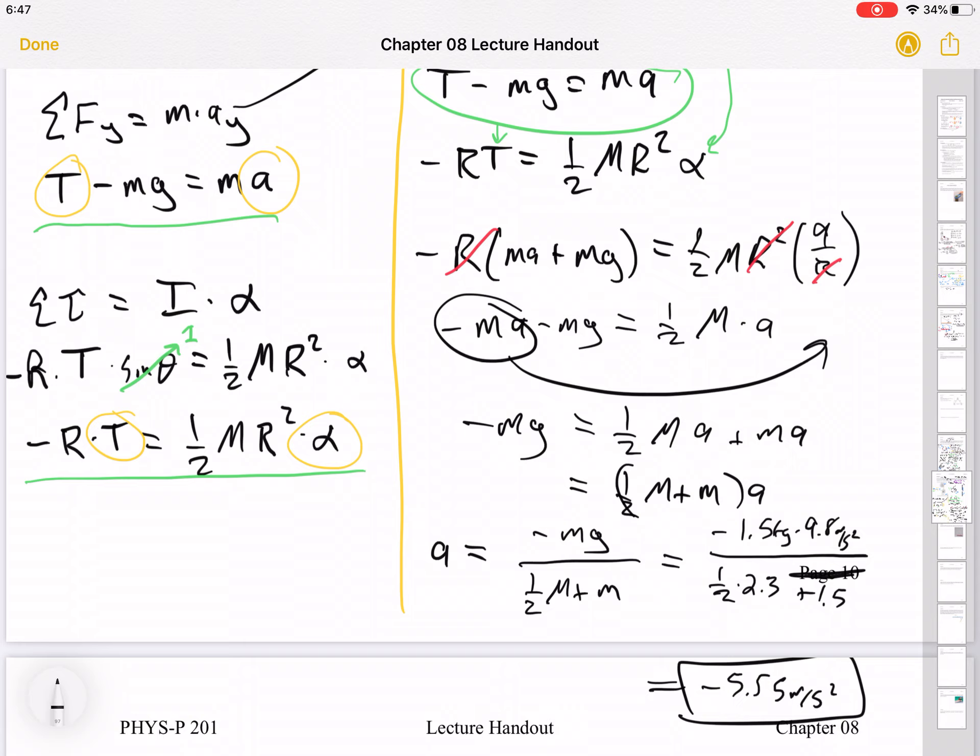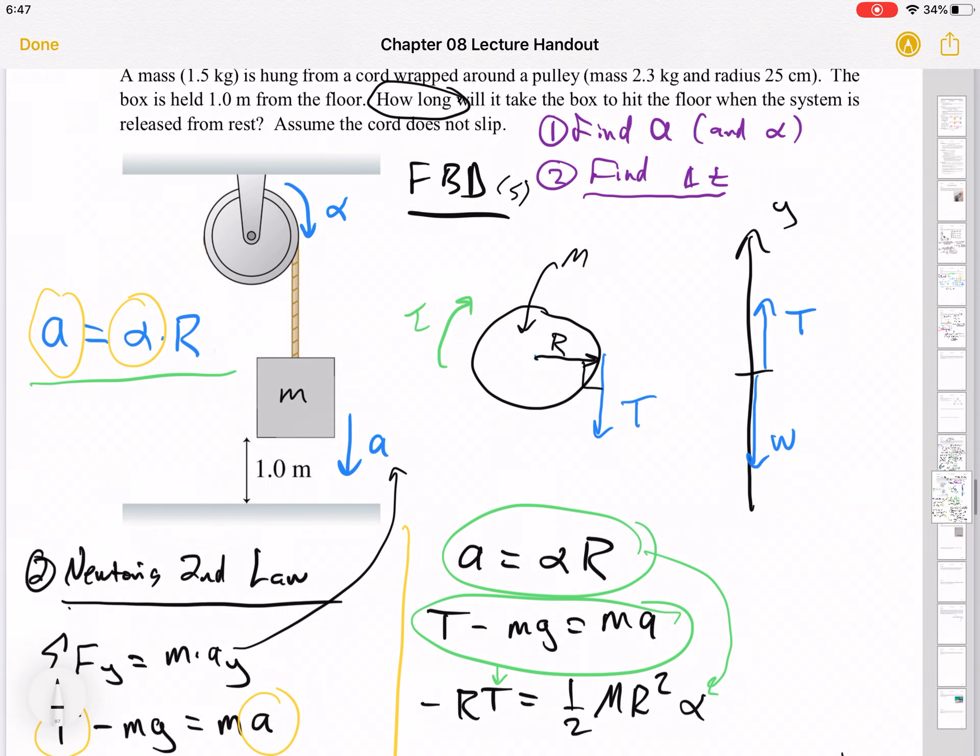So does that make sense? Well, it's negative. I was expecting it to be negative, that's great. It's less than g because if this box were falling under free fall, it would fall at 9.8. And here it's falling at 5.5. So yeah, that's not crazy. This probably is correct. And in fact, it is correct, but it's good to gut check it.